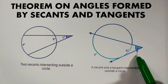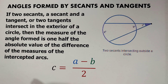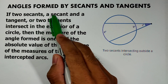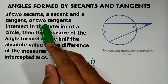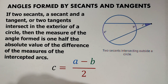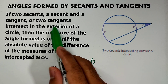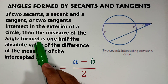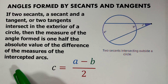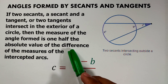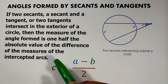Now, what is the theorem on that angle? The theorem states that if two secants, a secant and a tangent, or two tangents intersect in the exterior of a circle — exterior means outside of the circle — then the measure of the angle formed is one-half the absolute value of the difference of the measures of the intercepted arcs.